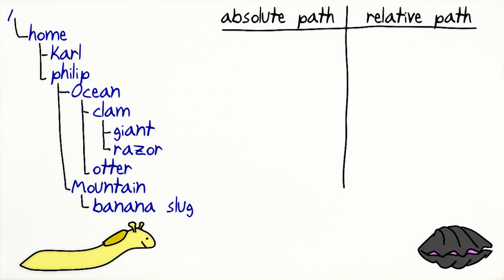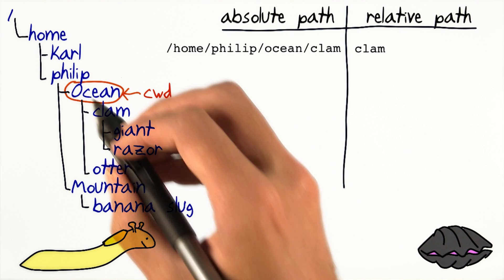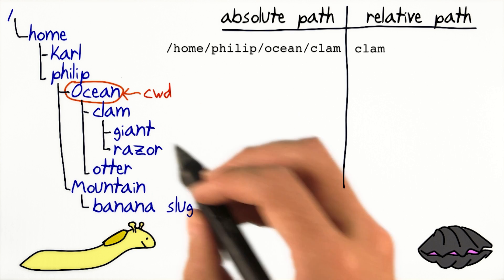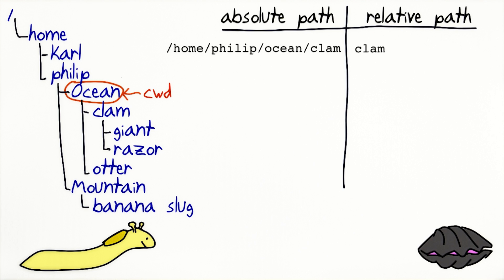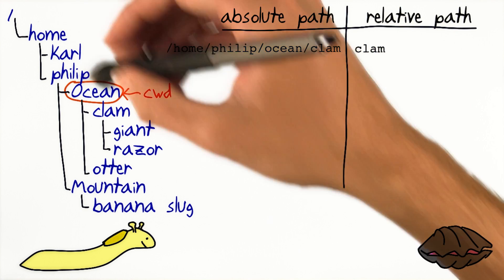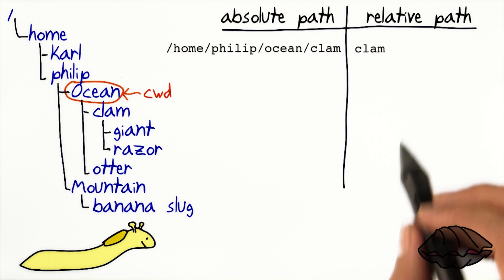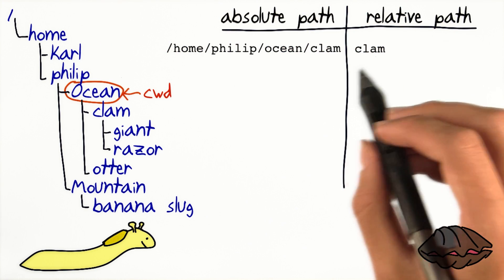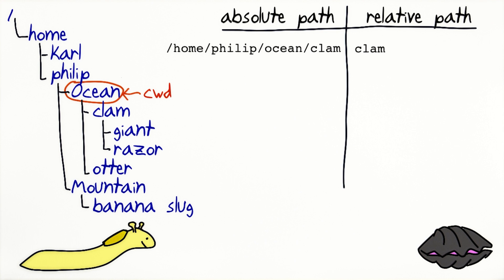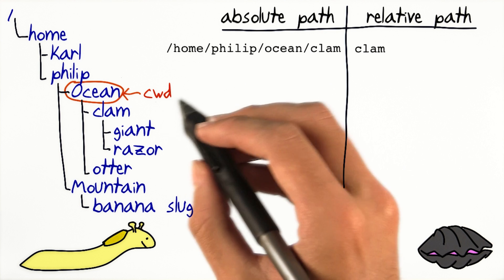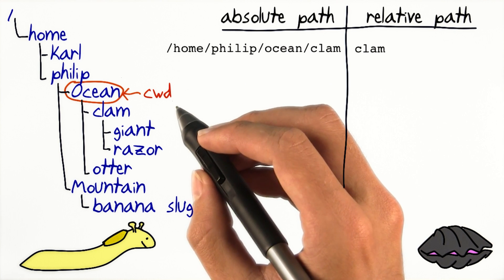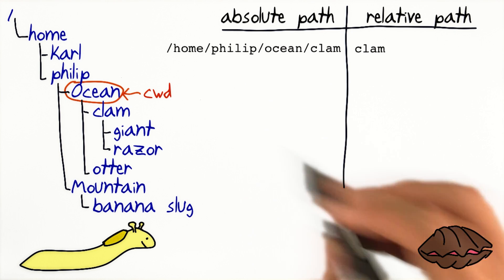The shell looks for the specified file name within the current directory. For example, if the current working directory is ocean, then the relative path of the clam directory is just clam. Rather than having the full path from the root, we can just have the path from the working directory. And cwd here is just an abbreviation for current working directory.